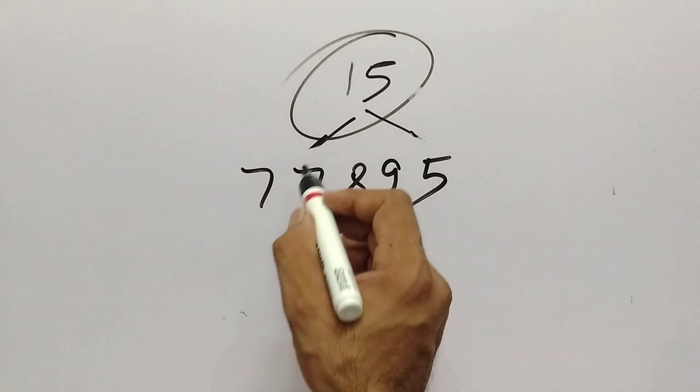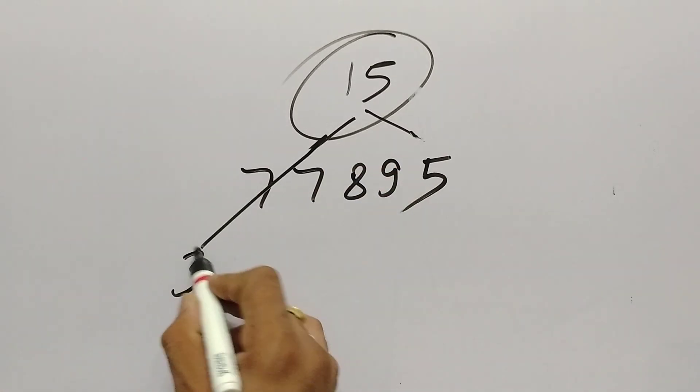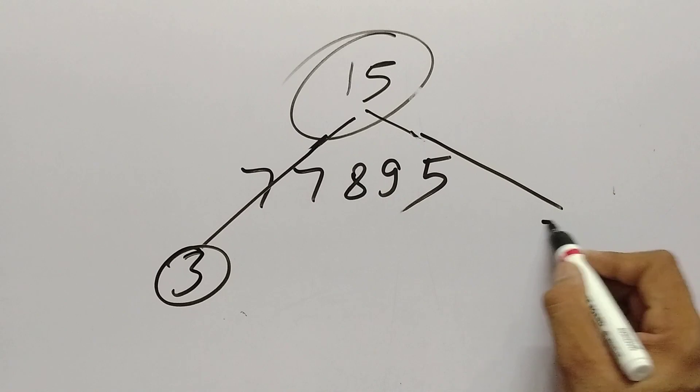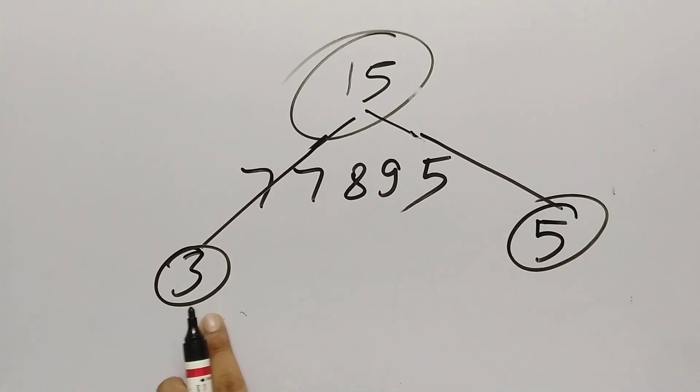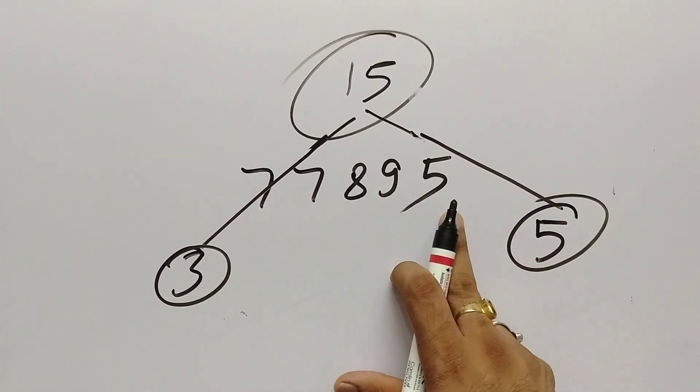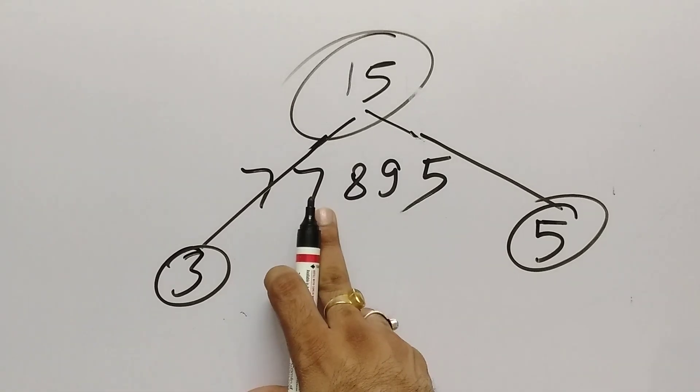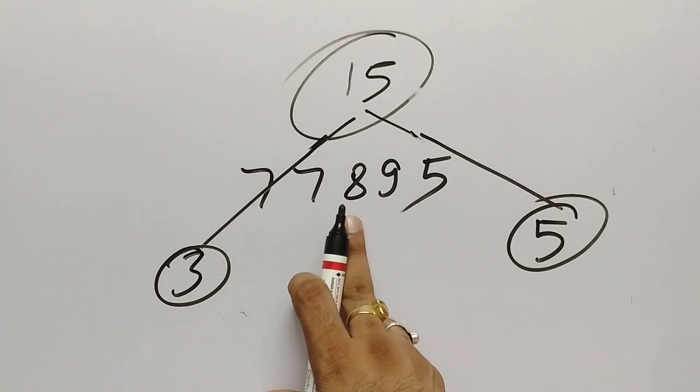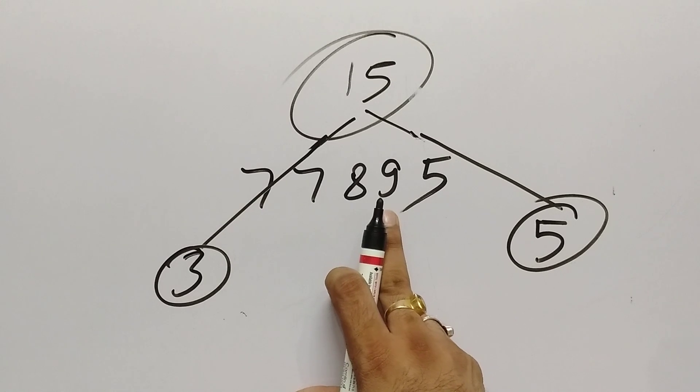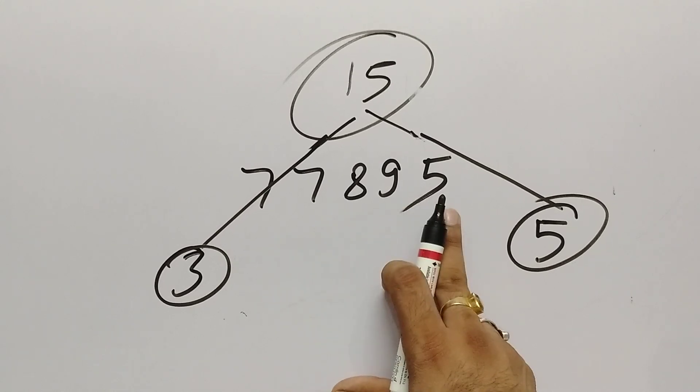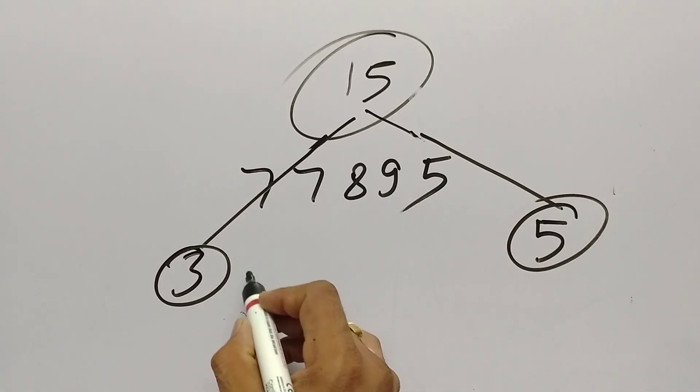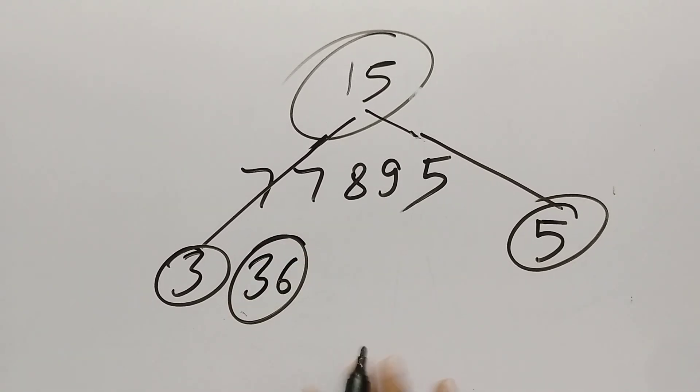Let's take one more example. Suppose the number is 77895. Again, we will make a tree. Check it for 3, check it for 5. For 3, add all the numbers. 7 plus 7 is 14, 14 plus 8 is 22, 22 plus 9 is 31, 31 plus 5 is 36.